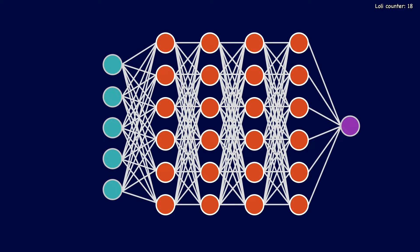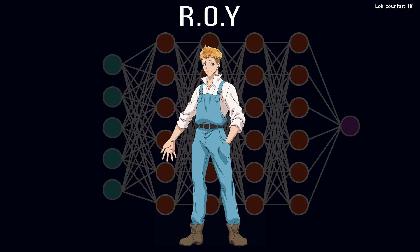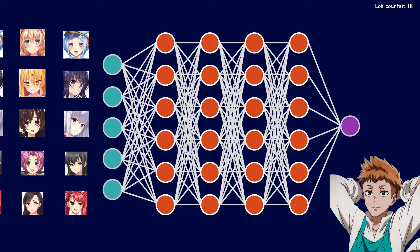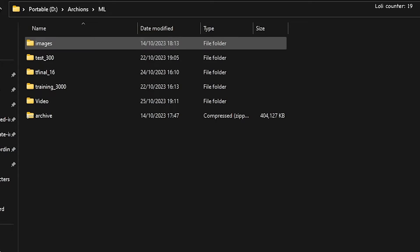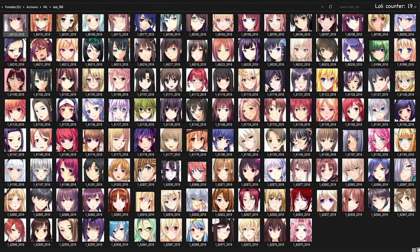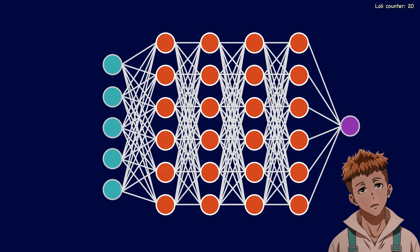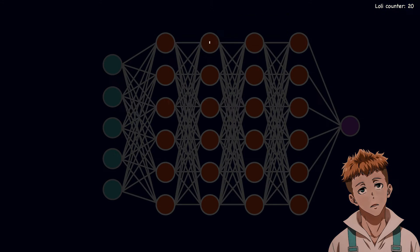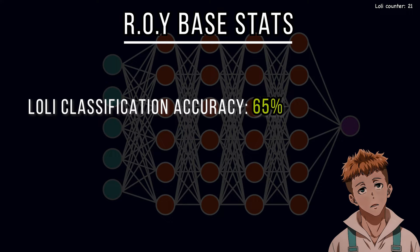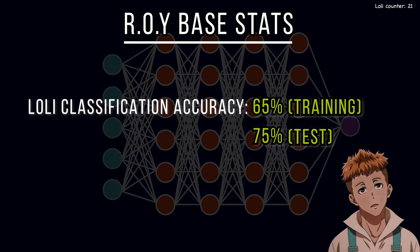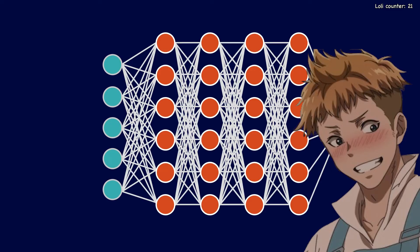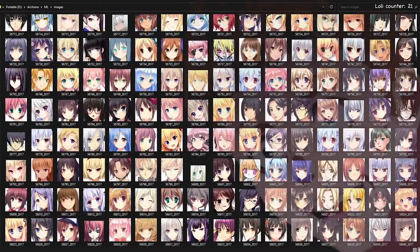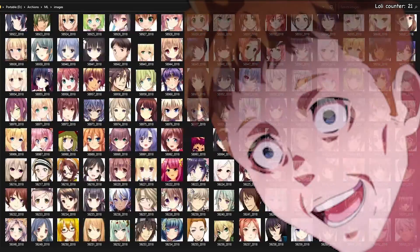With that out the way, it's time to start training our model, which we'll name Roy. We'll give Roy 3,000 faces so he can learn what a lolly looks like, and we'll also use another 300 faces to test Roy's ability to identify a lolly out in the wild. After Roy's first run-through of all 3,000 images, he has a lolly classification accuracy of around 65% on the training images and 75% accuracy on the 300 test images. Not bad, but he can certainly do better. So we're going to force Roy to look at these 3,000 waifus another 9 times.